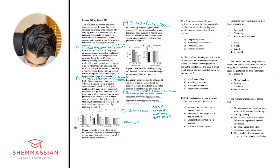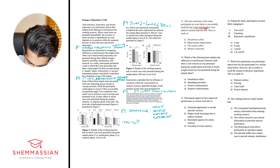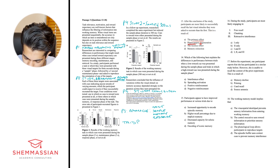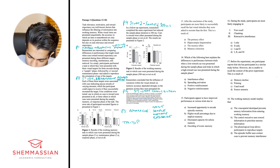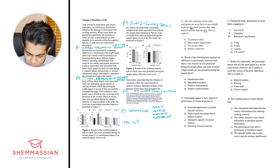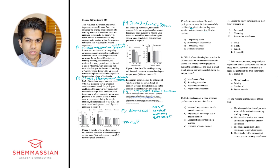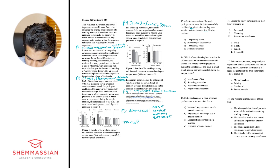Question 1: After the conclusion of the study, participants were more likely to successfully recall the last visual stimulus they were asked to recreate than the first. This is a result of: A) the primacy effect, B) hippocampus degeneration, C) recency effect, or D) memory extinction. The key thing mentioned is that participants were more likely to remember the last stimulus than the first. The primacy effect is basically the opposite — you're more likely to remember information appearing at the beginning of a sequence.